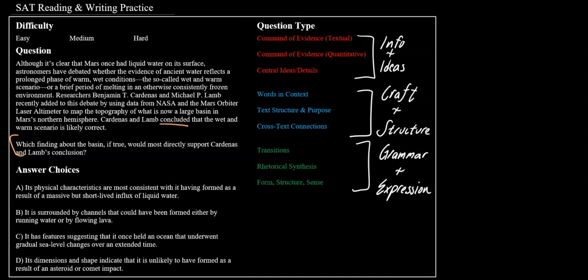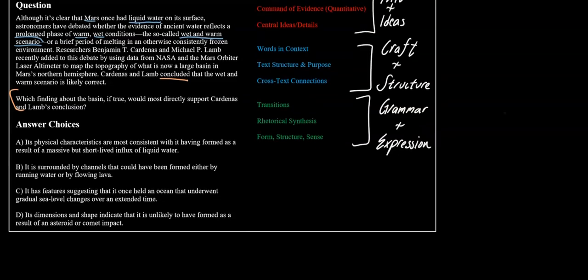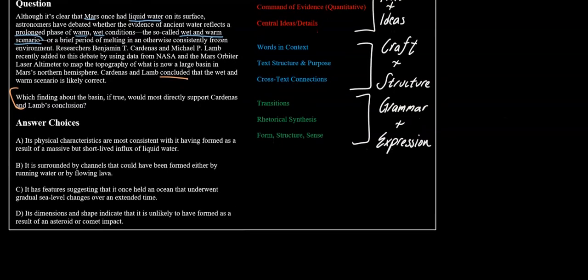It looks like here we're talking about Mars, which might have once had liquid water. And the wet and warm scenario represents a prolonged phase of warm, wet conditions. Now which of these answer choices is going to best represent a climate with warm, wet conditions?